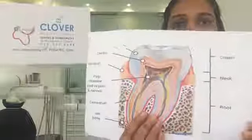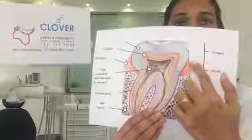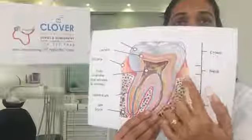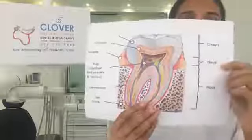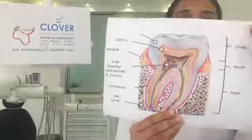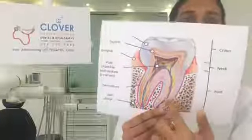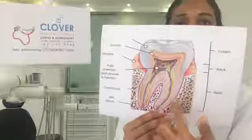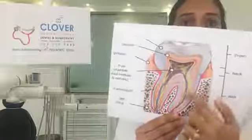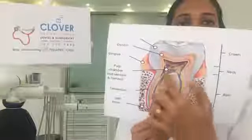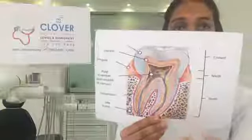If you see this picture, this is your natural tooth. It has what is called a crown, which you can see in your mouth, and below that is the root. In the root, we have the pulp, which provides all the blood supply and nerve supply to the tooth. Whenever this pulp gets infected, we get tooth pain.